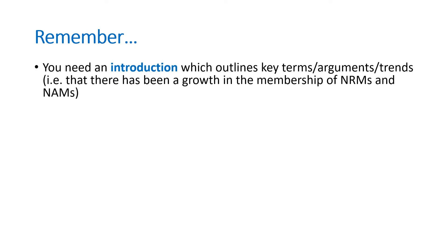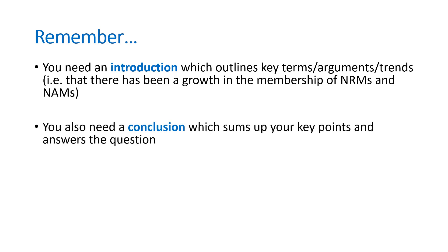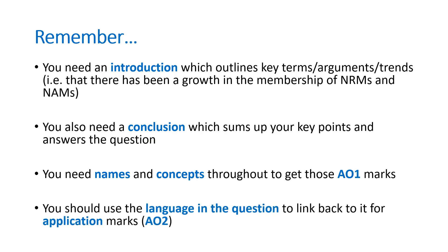Things to remember: in a question like this, you also need an introduction which outlines key terms, arguments, or trends. For example, I wouldn't necessarily describe what a new age movement or new religious movement is — instead I'd outline the trend that there's been a growth in the membership of NRMs and NAMs and that there are different sociological contributions to explain this. You also need a conclusion which sums up your key points and answers the question. You need names and concepts throughout to get those AO1 marks. And finally, you need to always use the language in the question to link back to it for application marks.